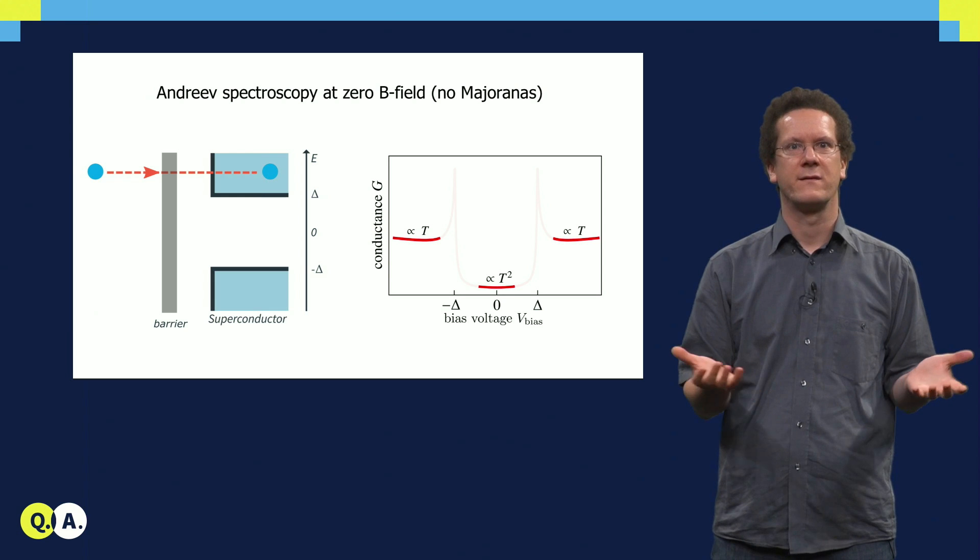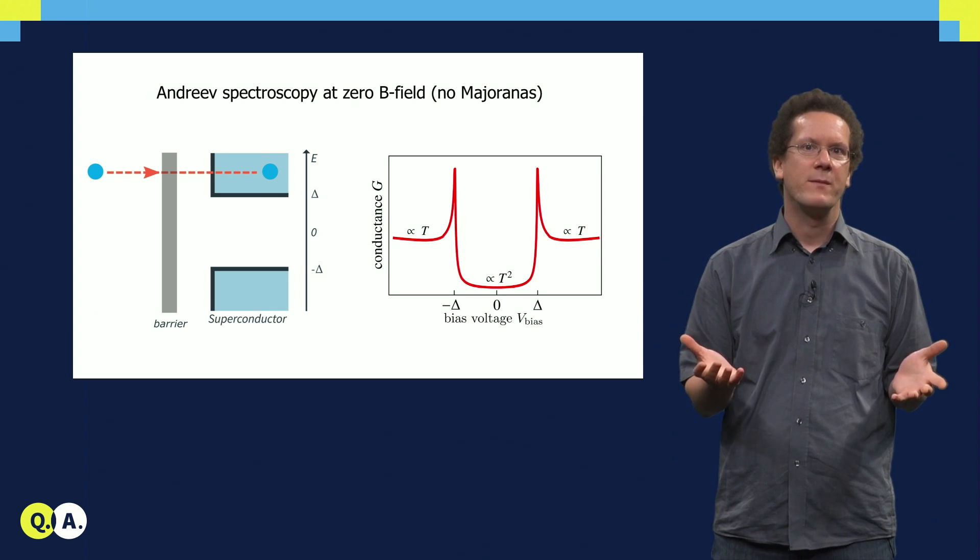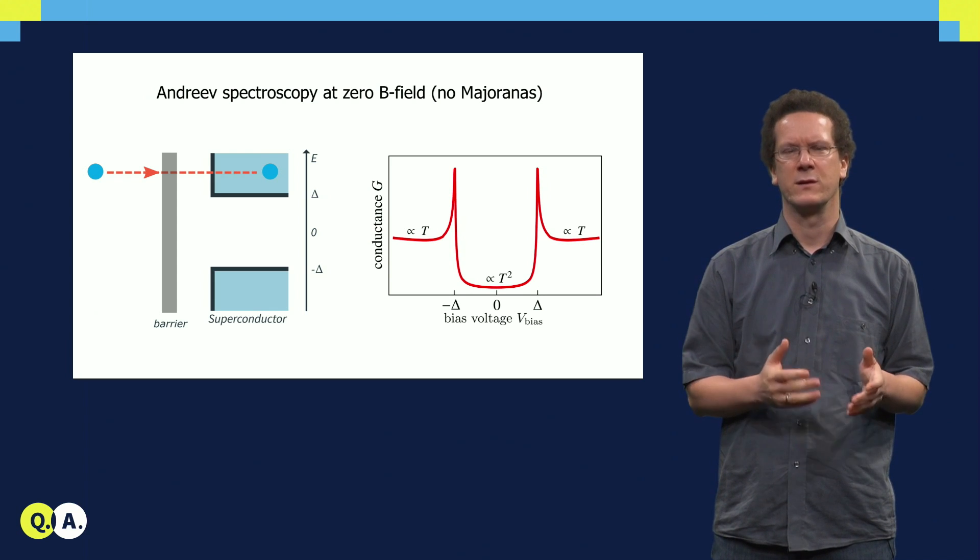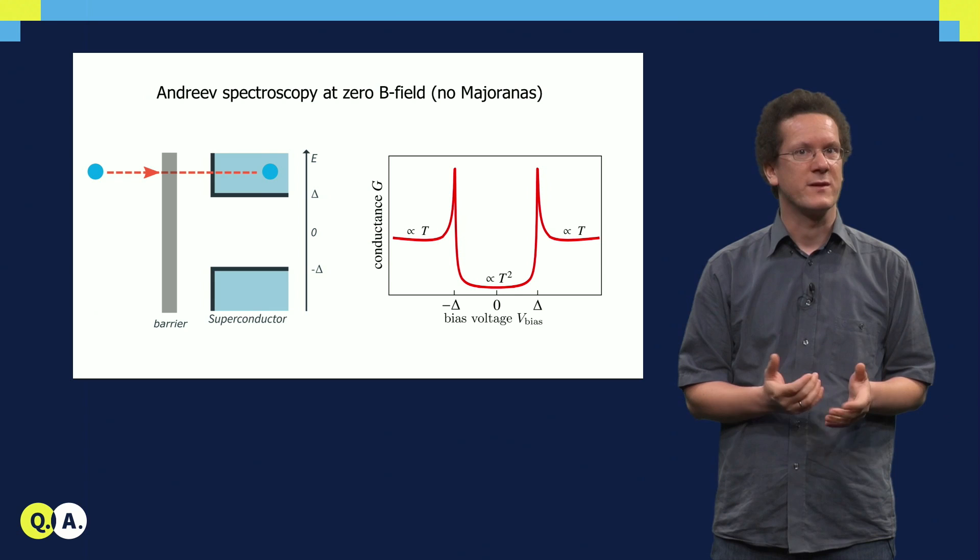Inside the gap, the conductance is thus lower than outside the gap. Right at the gap, there is resonant behavior, so the total conductance has this particular shape shown on the slides. Note that one can actually directly read off the superconducting gap delta from such a measurement.